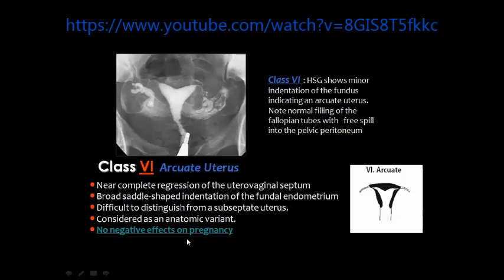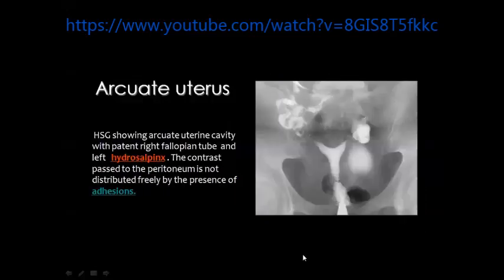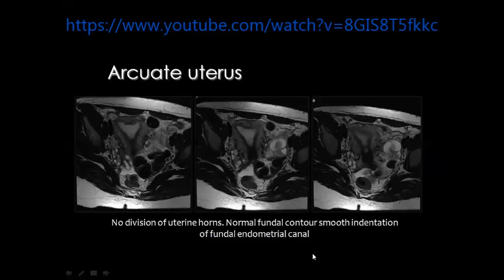Arcuate uterus is considered by many as a normal variant. There is some depression in the uterine fundus as seen by MRI and also by hysterosalpingography. Arcuate uterus has no negative effects on pregnancy. You can see here the arcuate uterus with an associated hydrosalpinx on the left side but the right tube is patent and spilling contrast material into the peritoneal cavity. The frontal depression is visible but the endometrial cavity is not divided, and you can see the junctional zone and appreciate the uterus with the ovaries.